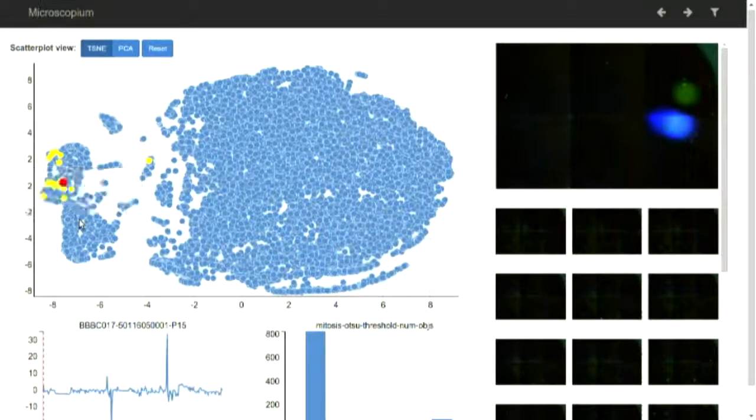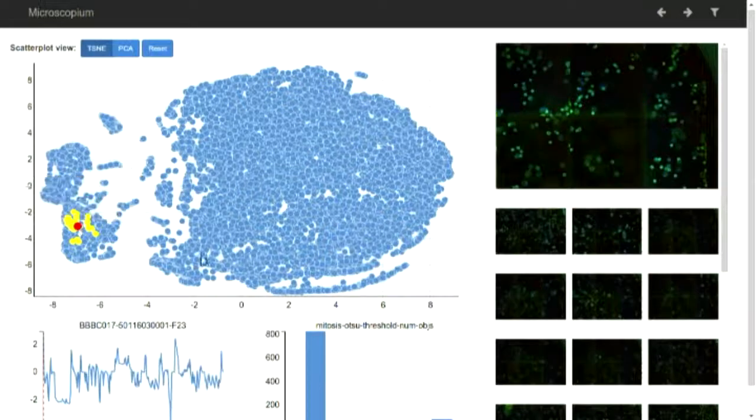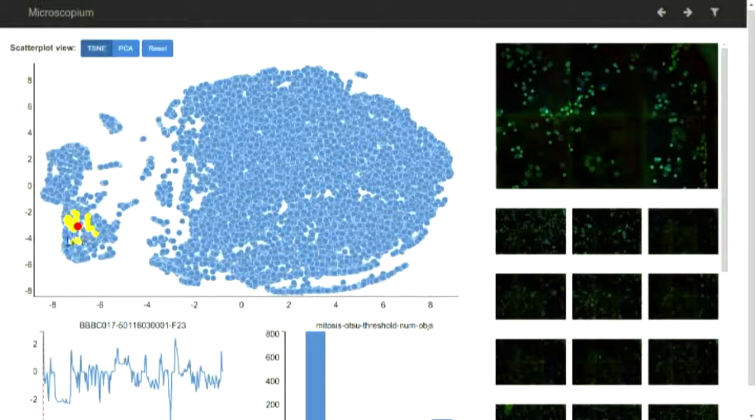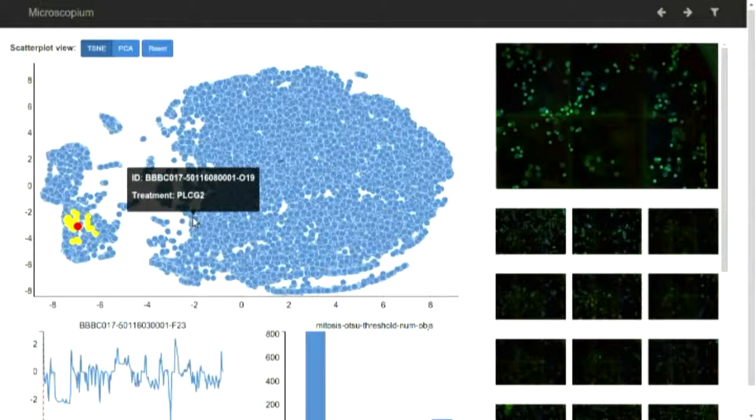Without any prior training or knowledge, it's actually created this grouping of all of the images. In the Microscopium interface, I can click around this scatterplot and each time I click on one of those points, what I'm getting is the image that's represented by that point and its 25 nearest neighbors. This being the images that our features are determined are most similar to the one that I've just clicked on.